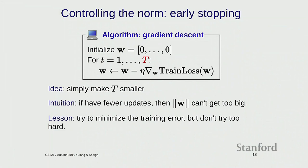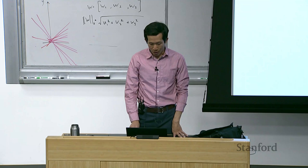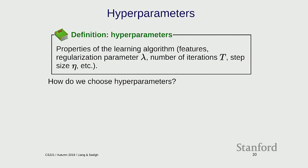How do you decide the value of lambda or the stopping time t? These are called hyperparameters. So far they're just magical values given to the learning algorithm. Other hyperparameters include which features you have, the regularization parameter, number of iterations, and step size for gradient descent. Someone has to set them — but how?